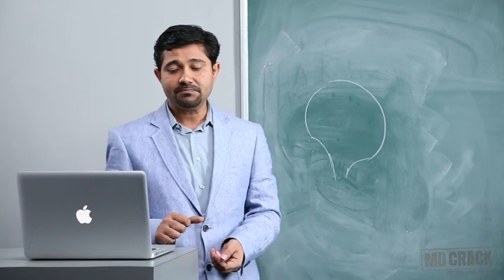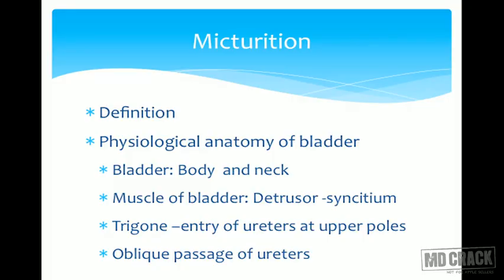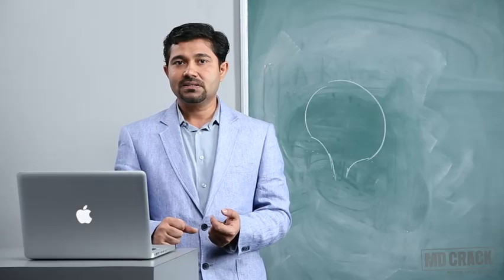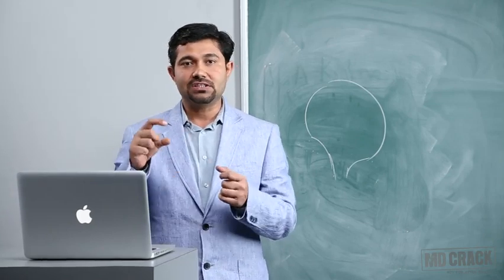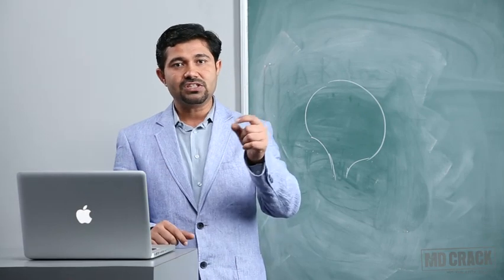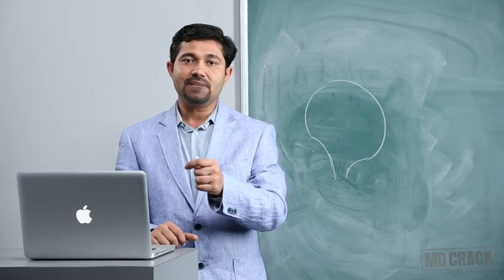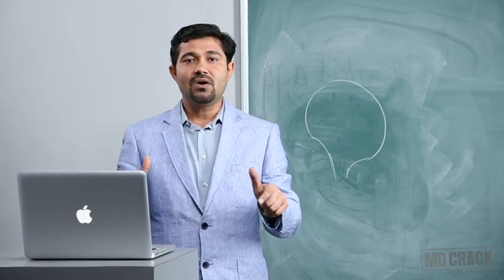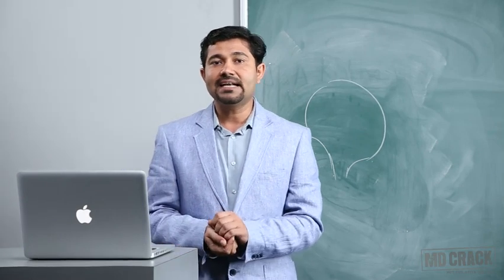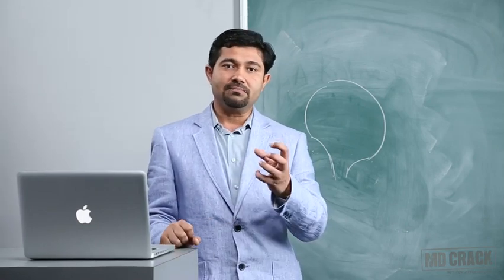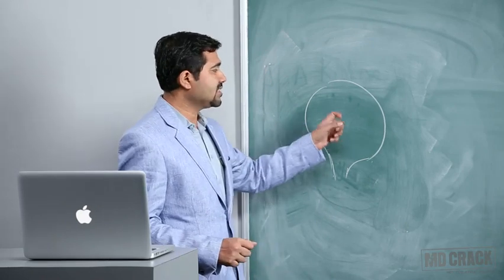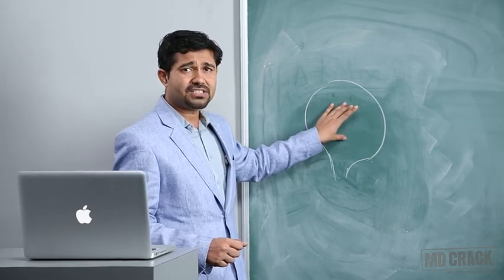The muscle of the bladder is called the detrusor muscle. The peculiarity of this detrusor muscle is that it is a smooth muscle and a syncytium — it acts as one unit because there are gap junctions between the muscle fibers. Whenever an action potential is generated in one fiber, it rapidly spreads to all fibers, so all muscle fibers contract together, generating sufficient pressure to void urine.